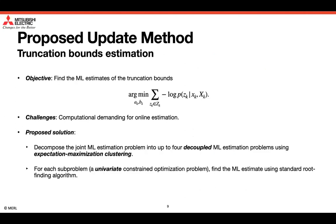As for the truncation bounds estimation, the objective is to find the maximum likelihood estimates of the truncation bounds. However, directly solving this optimization problem can be computationally demanding. In this work, we choose to find an approximate solution by decomposing the joint maximum likelihood estimation problem into up to four decoupled maximum likelihood estimation problems using clustering. And then for each subproblem, it is a univariate constrained optimization problem. We can find the maximum likelihood estimate using some standard root-finding algorithm.